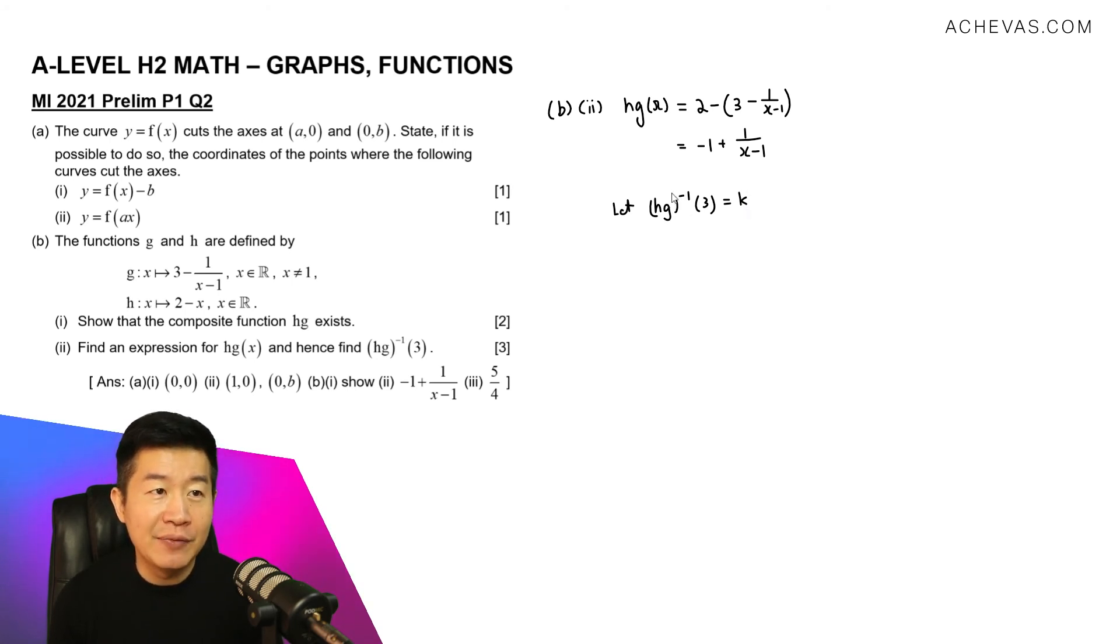And I'm going to bring this inverse over to the right hand side. So 3 is going to be equal to hg of k. So 3 is going to be equal to hg we have found in the previous part. It is minus 1 plus 1 over (x-1). And I'm going to replace this x here by k. So it is going to be (k-1).